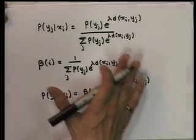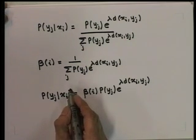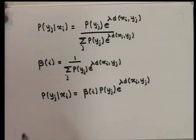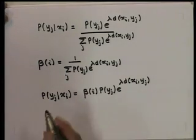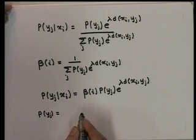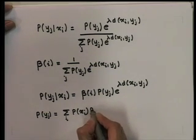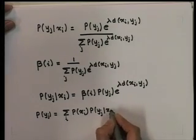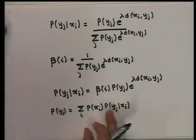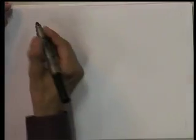This procedure yields a set of equations for each i and j, where probability of y_j given x_i is expressed in terms of probability of y_j. It therefore remains to determine the probability p(y_j), and in general p(y_j) is equal to the summation over i of p(x_i) multiplied by conditional probabilities p(y_j | x_i). If we divide this equation by probability of y_j and use this relationship, we get the following relationship.